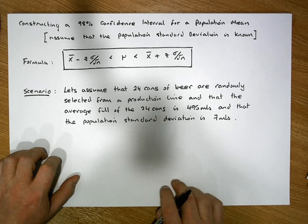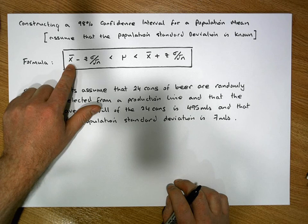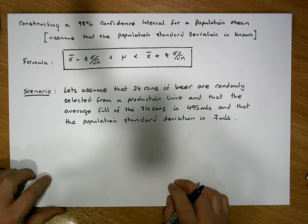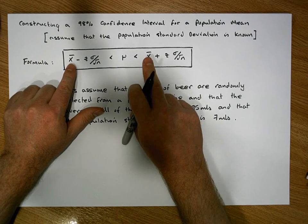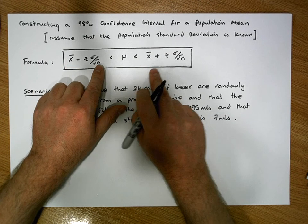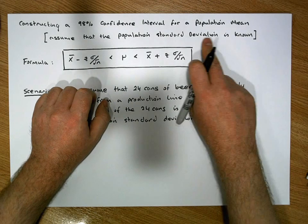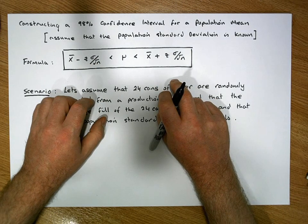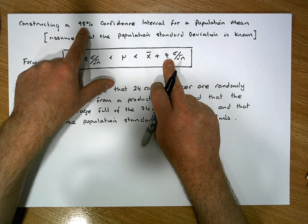In relation to the formula to calculate a 98% confidence interval, the question must provide detail information about the sample statistics — in other words, information about the sample randomly selected from the population. In particular, it must tell you the sample mean x-bar, the sample size n, and since we're assuming the population standard deviation is known, sigma must also be given. The only thing left to calculate is the appropriate z-score that goes along with a 98% interval.